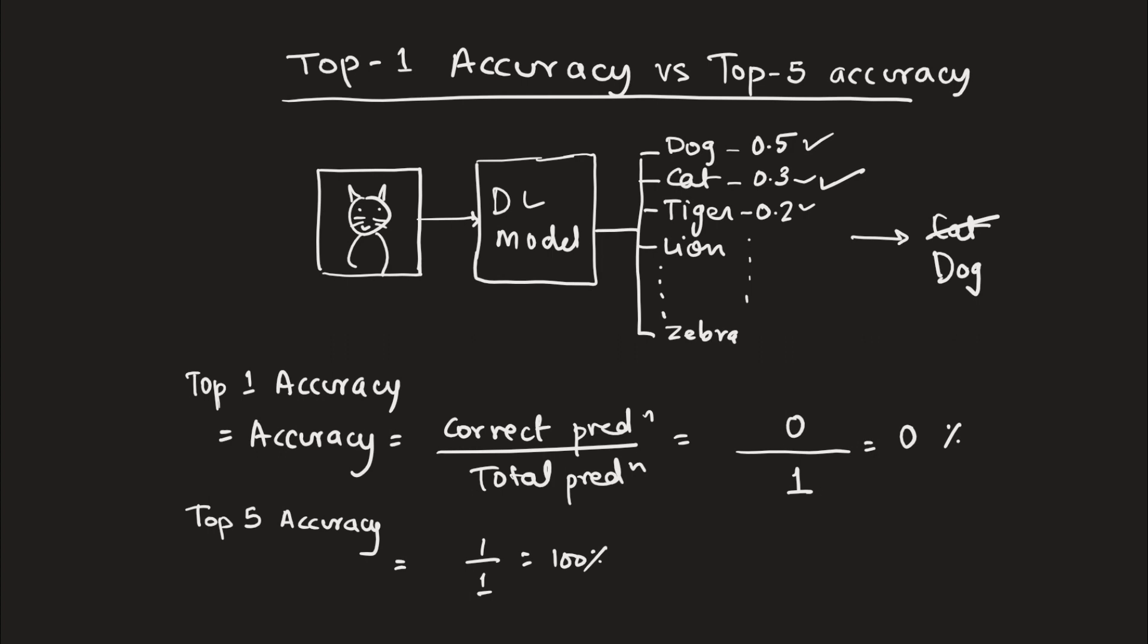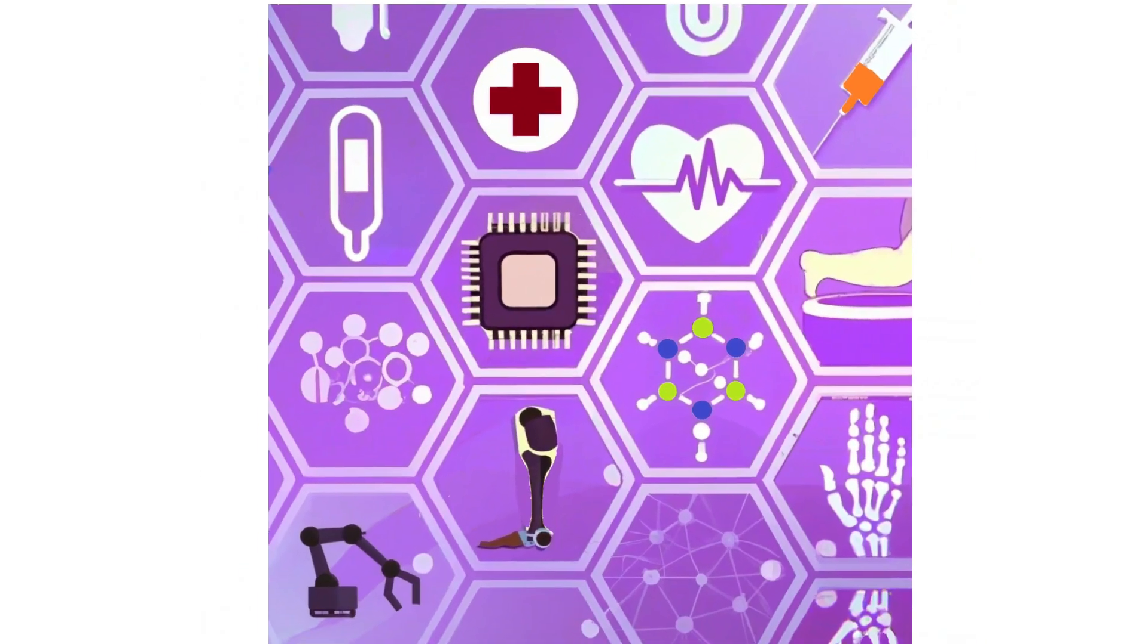So as we can see, the top-5 accuracy is a much less stringent measure of accuracy and this can be used in a variety of cases.